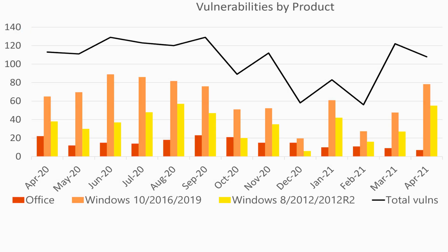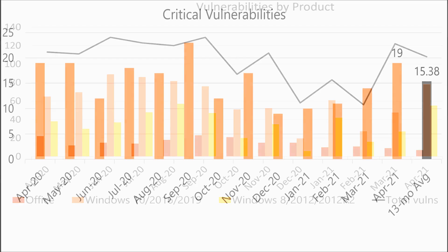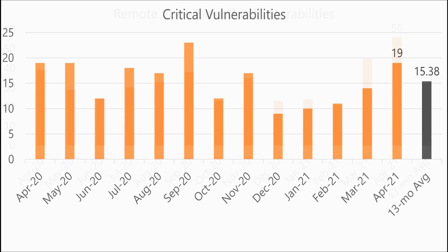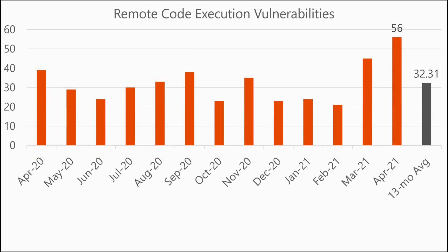So we'll start with an overview of the release. For this month we have 108 total vulnerabilities being addressed, which is just slightly above our 13-month running average of 104. We see 19 total critical vulnerabilities, a little bit above our average. When we look at the remote code execution vulnerabilities this month, we'll see an anomaly — 56 total vulnerabilities, which is almost double our average of 32 per month.